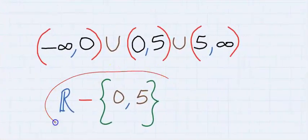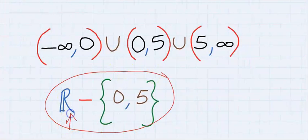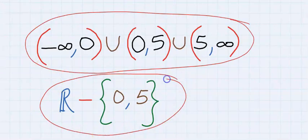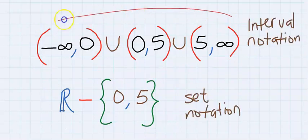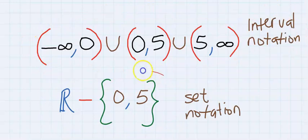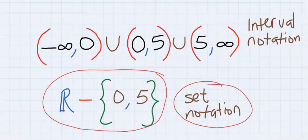Another way to represent this answer is all real numbers except zero and five. This is an answer and this is also the answer - both have the same meaning. This answer is in interval notation, while this answer has been represented in set notation.